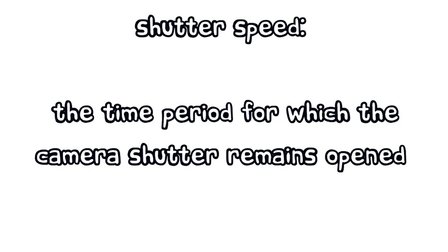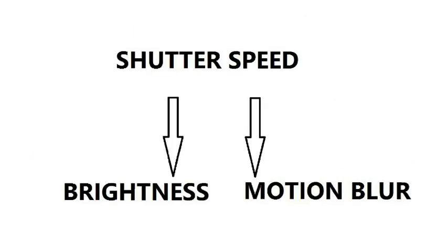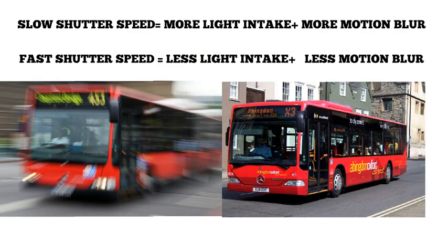So, shutter speed controls two things: one is the brightness, and two is the motion blur. This is the simple logic here. When the shutter speed is low — that means 2 seconds, 3 seconds — every moment of the image is exposed.